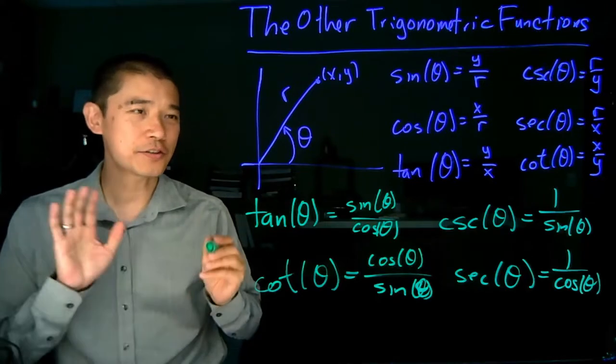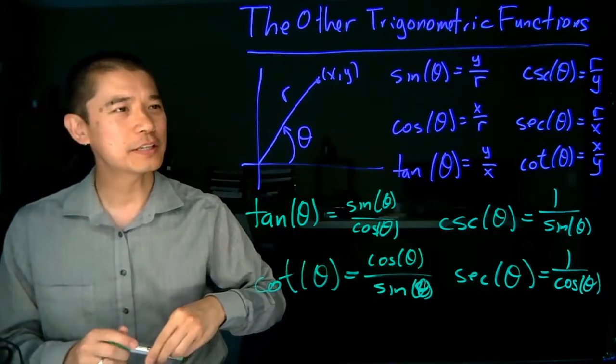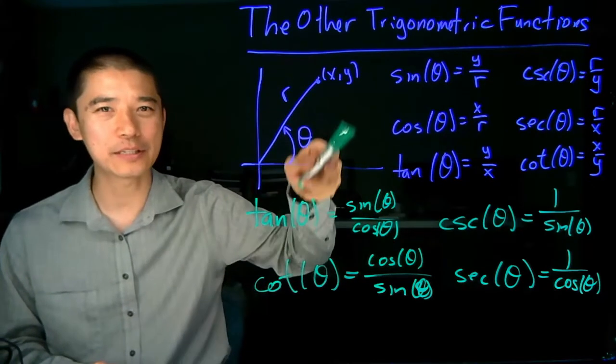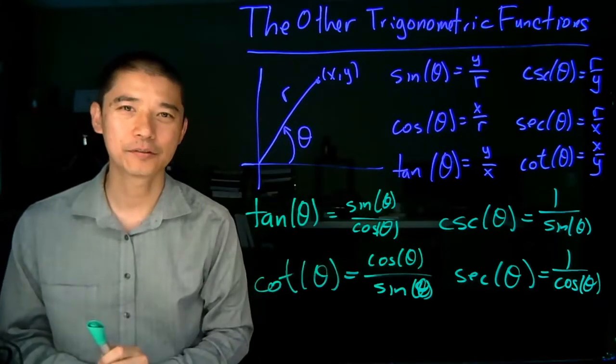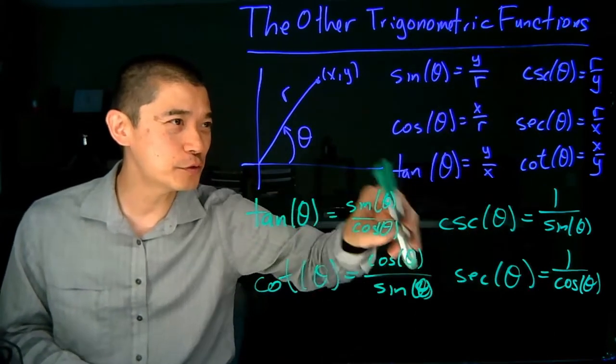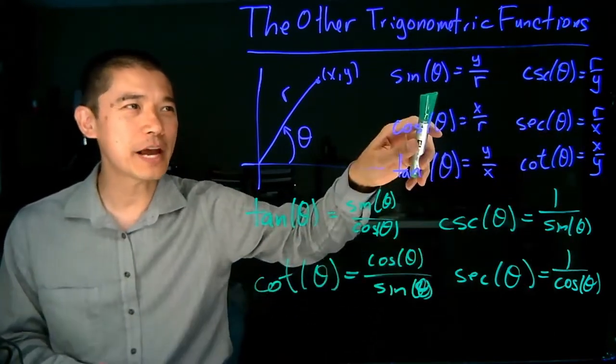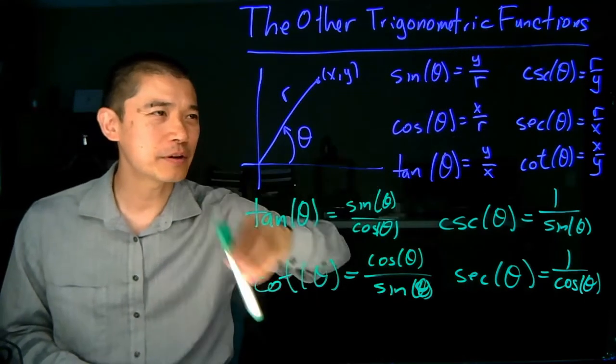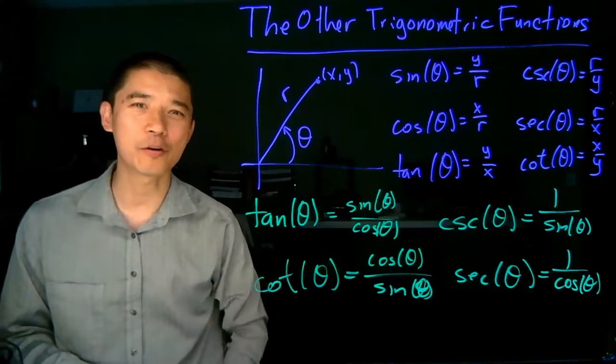And so what this does is this shows us two things. First thing is that it shows us that all of these trigonometric functions are related back to the same basic picture. The second thing it shows us is that these four new trigonometric functions are related back to the sine and cosine functions. So this shows us a relationship on how all these trigonometric functions are related to each other.